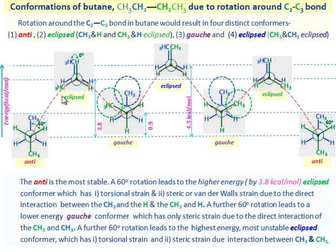The higher energy eclipsed conformer has torsional strain and steric or van der Waals strain due to direct interaction between the CH3 and H groups. A further 60-degree rotation leads to the lower energy gauche conformer, which has only steric strain due to direct interaction between the two methyl groups. A further 60-degree rotation leads to the highest energy, most unstable eclipsed conformer, which has torsional strain and steric strain due to direct interaction between the two CH3 groups.